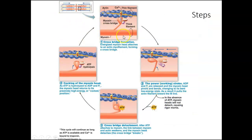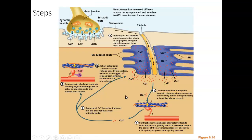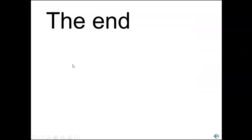Here are the steps again — you might want to watch this more than once. This diagram shows the big picture: it all begins with a motor neuron releasing acetylcholine, causing an action potential in the muscle cell, the action potential causing calcium to be released, and the calcium allowing contraction to happen. This is the end of the muscular system. Next, we will start the nervous system and talk about the brain and some of the cranial nerves.